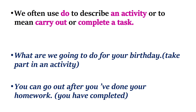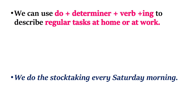We often use 'do' to describe an activity or to mean carry out or complete a task. Examples: What are we going to do for your birthday? You can go out after you've done your homework. We can use 'do' plus a determiner plus a verb ending in -ing to describe regular tasks at home or at work. Example: We do the stock-taking every Saturday morning.